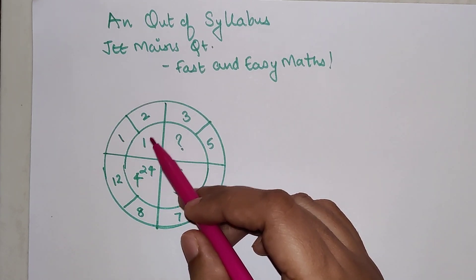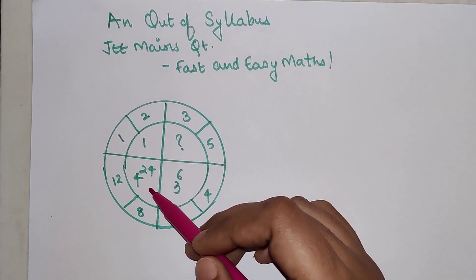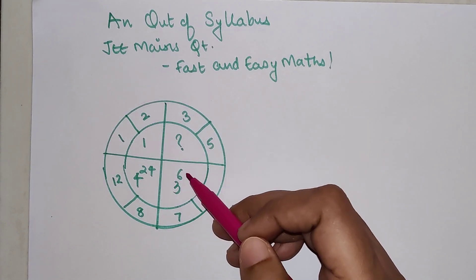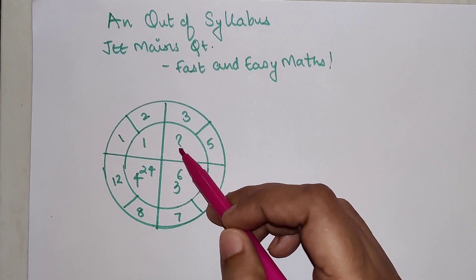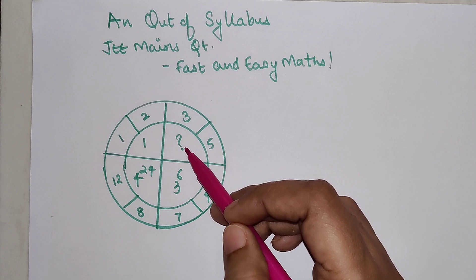Now here 1 is not raised to any power. 4 is raised to 24 and 3 is raised to 6 and here this is the block which we need to find, or here the number is something which we need to find.